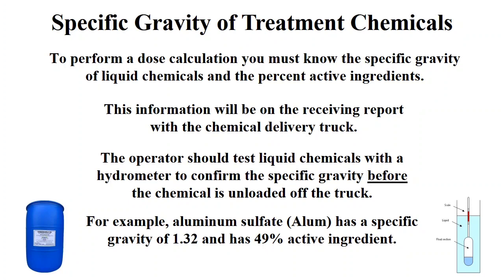Mistakes can happen at the chemical manufacturing plant or the chemical loading station. The best time to discover a problem with a chemical is while it is in the truck, not in your bulk tank. An example of a specific gravity is 1.32 for aluminum sulfate, or alum.